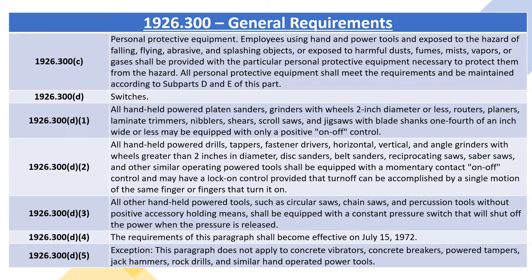All personal protective equipment shall meet the requirements and be maintained according to subparts D and E of this part. 1926.300(d) Switches. 1926.300(d)(1): All handheld powered platen sanders, grinders with wheels two inch diameter or less, routers, planers, laminate trimmers, nibblers, shears, scroll saws, and jigsaws with blade shanks one-fourth of an inch wide or less may be equipped with only a positive on-off control.